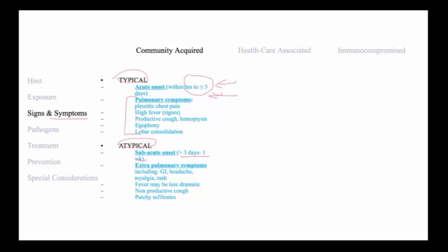Atypical pneumonia is characterized by extrapulmonary symptoms, including a predominance of GI, headaches, myalgias, rash, for example, while pleuritic chest pain is not usually present. Fevers may be less dramatic. There is often nonproductive cough, and infiltrates may be patchy.